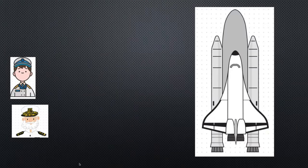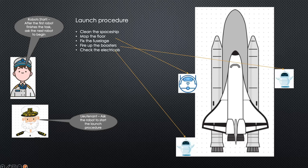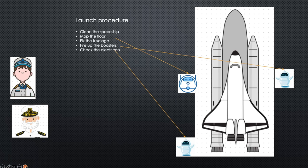Let's understand with the help of a story. Imagine you are the captain of a ship made up of lots of small parts and robots, each doing a specific job. The captain wants the ship ready for launch and assigns tasks: he asks his lieutenant to start the launch procedure, and the lieutenant tells all the robots to follow the launch procedures. Each robot is supposed to do a specific job, report back when done, and ask the next robot to begin.